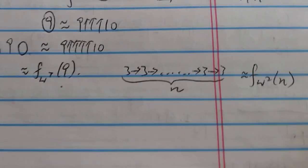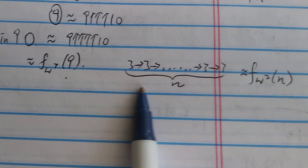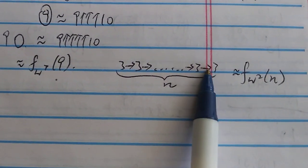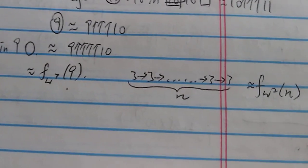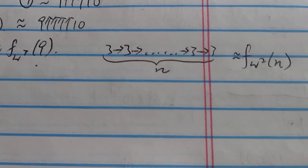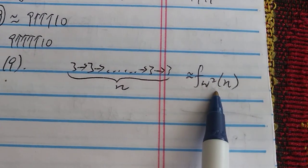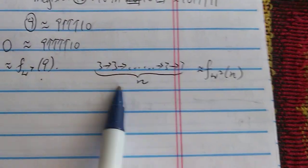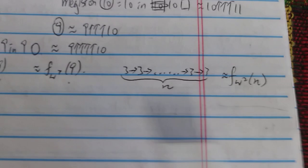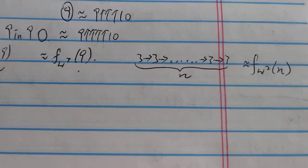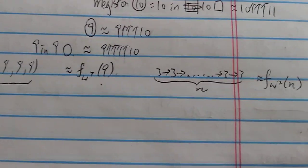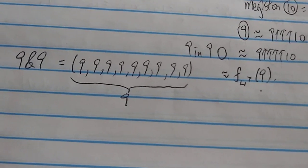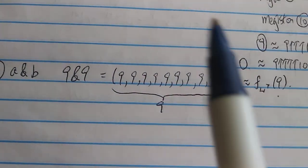As I mentioned in one of my previous videos, the chain arrow notation — 3 arrow 3 arrow 3... with n 3's — has a growth rate of around F_{omega^n} in the fast-growing hierarchy. Clearly the BEAF result is way beyond even that. And this number is already far, far beyond G(G(G...G(G64)...)), so this is how big the BEAF expression is.